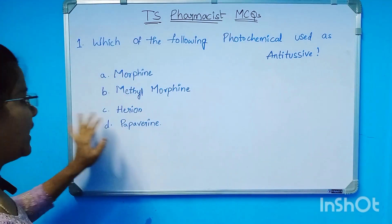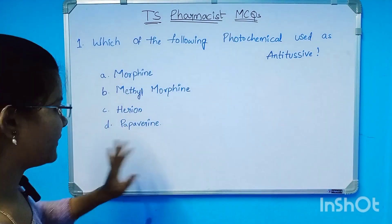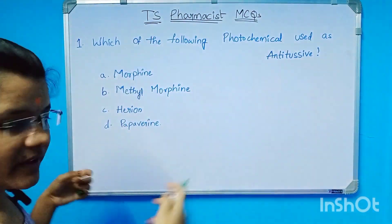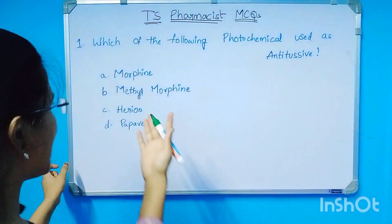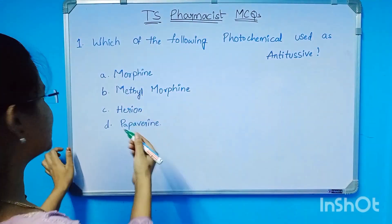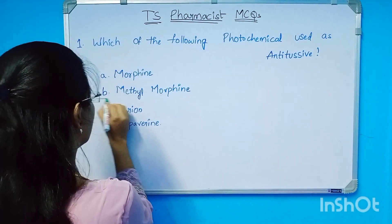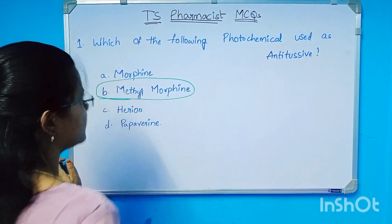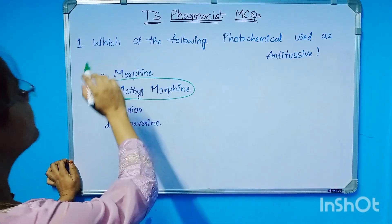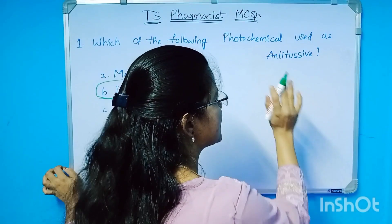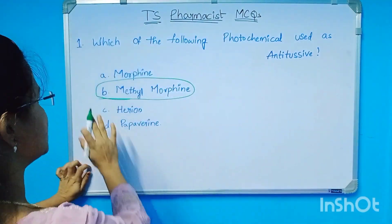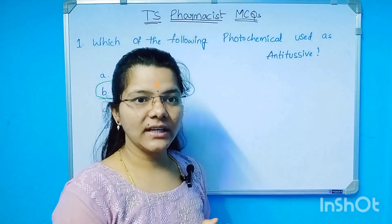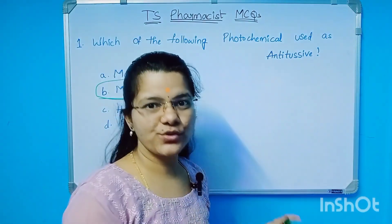The options to choose from are: Morphine, Methylmorphine, Heroin, and Pholcodine. The answer is option B — Methylmorphine. So, which of the following phytochemicals is used as an antitussive? The answer is Methylmorphine. The antitussive classification is based on the opioid mechanism.